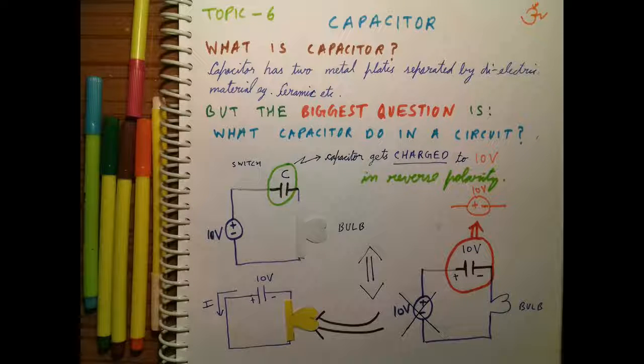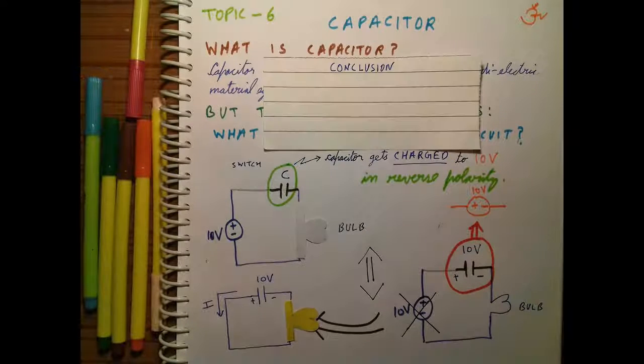So what is happening now? The capacitor is discharging. That's why it is providing current in the circuit. I hope the role of capacitor is clear now. Let us see the conclusion.